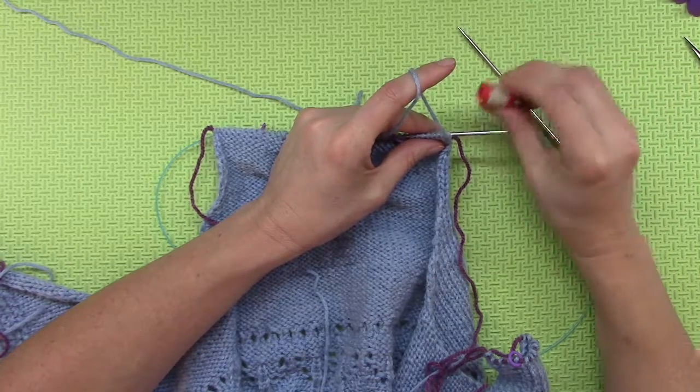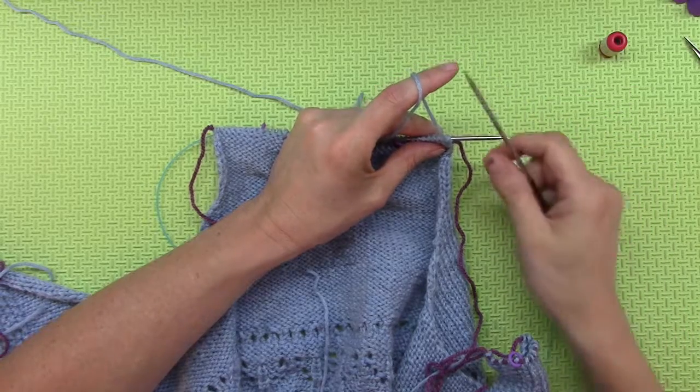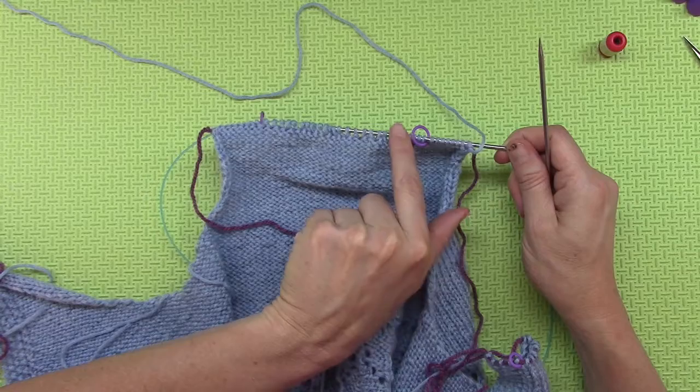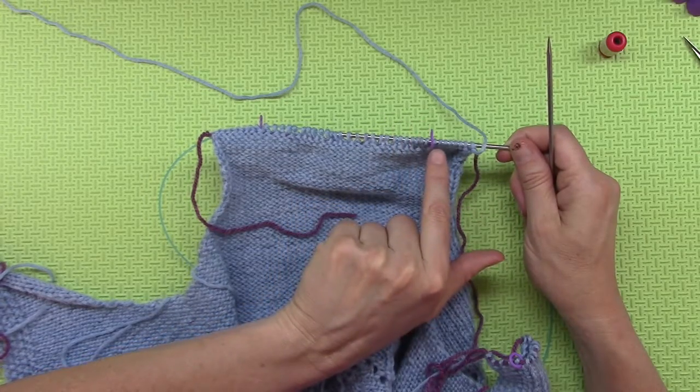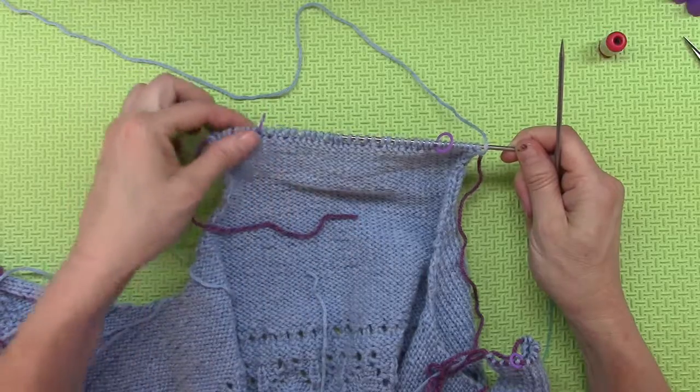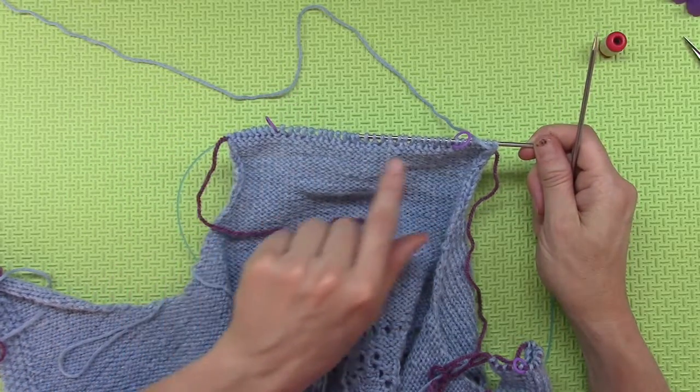That was row one I finished, used my row counter. Now row two, according to the instructions, you will purl up until your stitch marker, then you will do the seed stitch across up until your stitch marker, and then you will purl the rest.